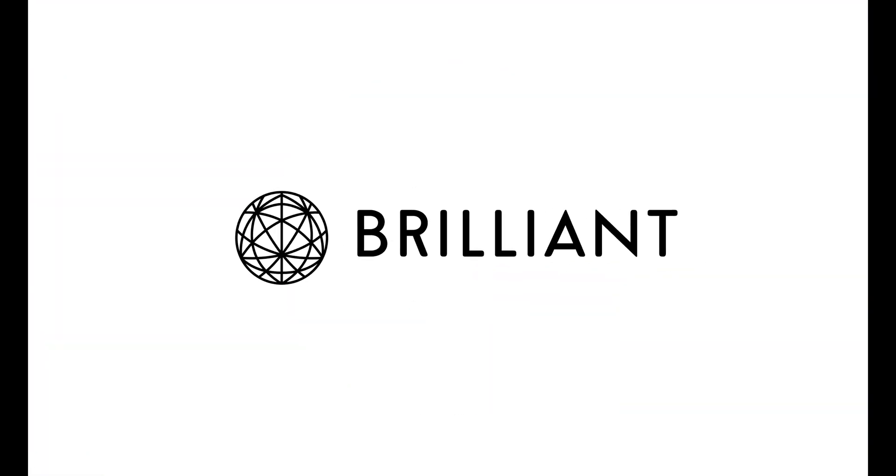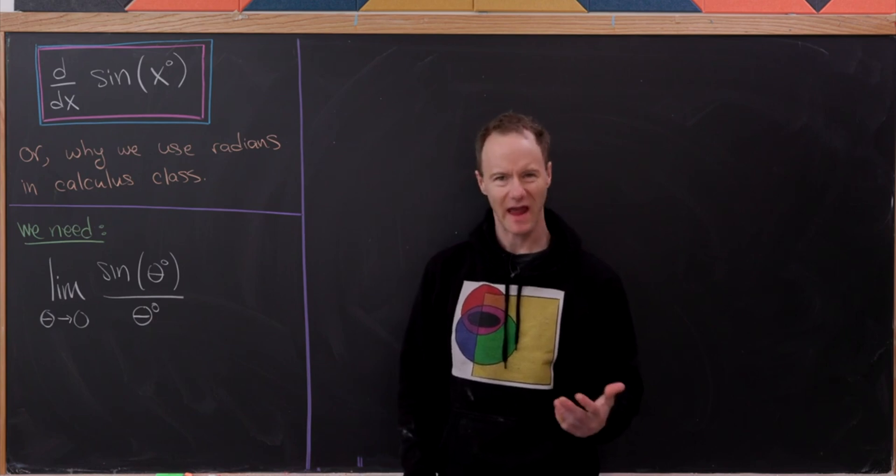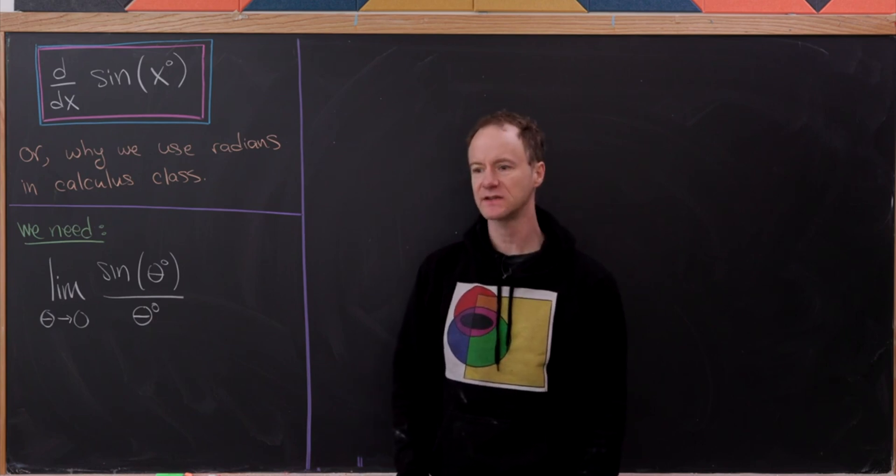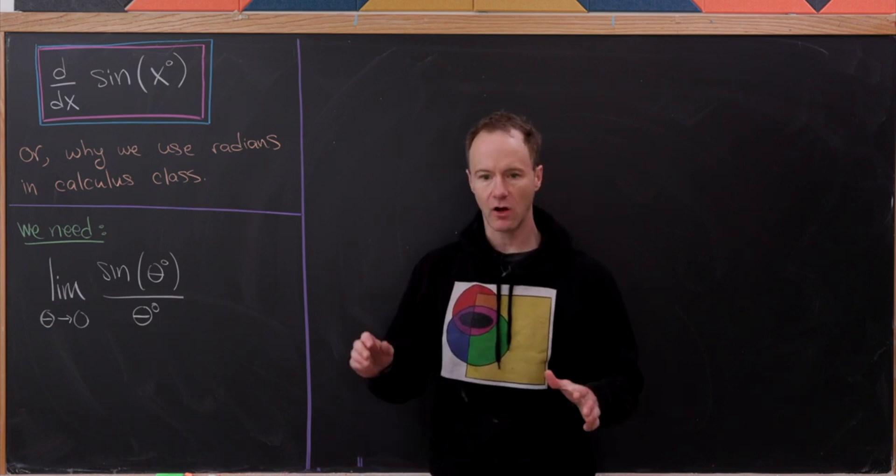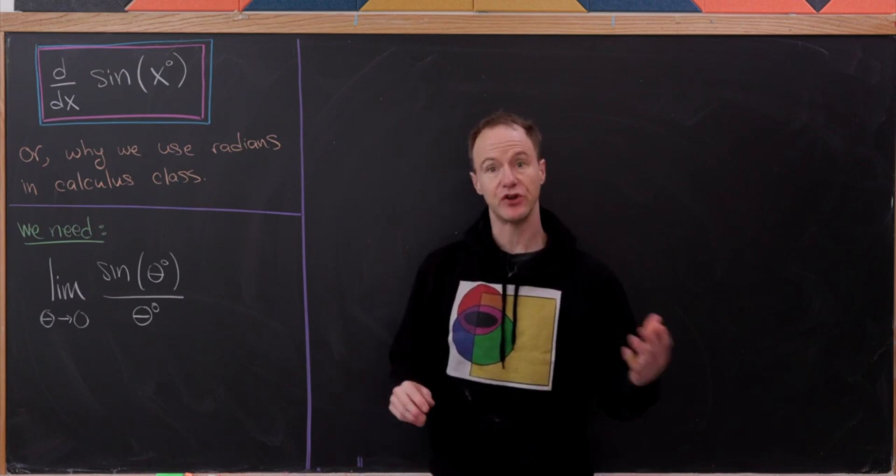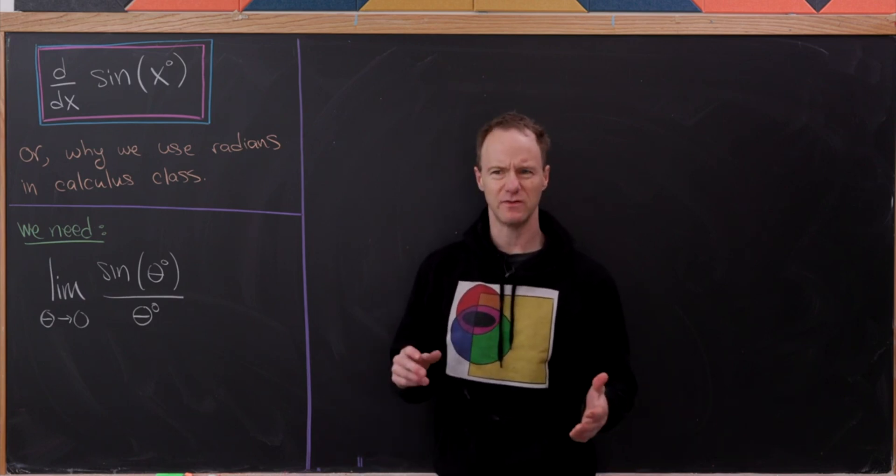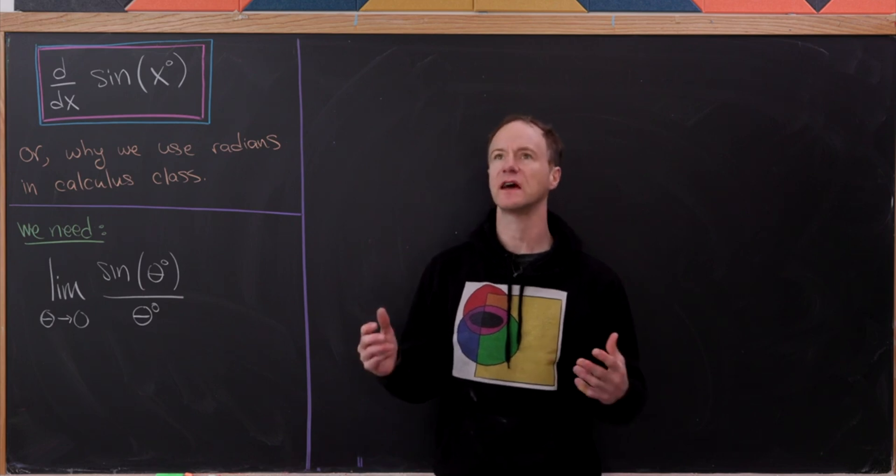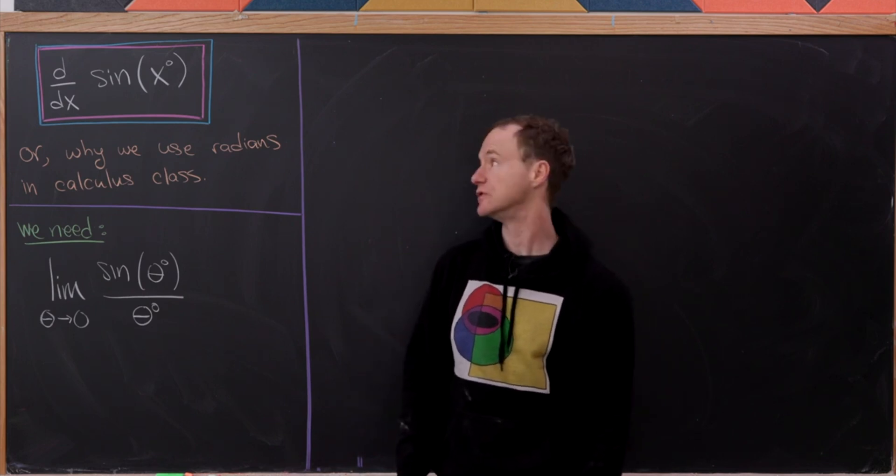Today's video is sponsored by Brilliant. Have you ever wondered why in calculus class every angle is measured in radians? Well, in fact there's a really good reason for that, and it all boils down to the derivatives of the trigonometric functions and how these derivatives have really nice relationships when you use radians but not so nice when you use degrees.